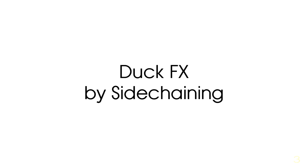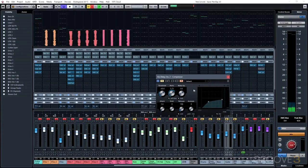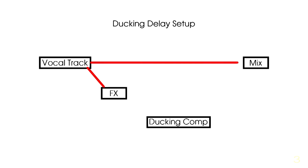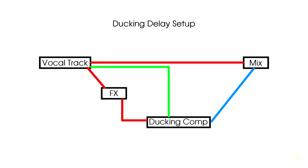Another favorite trick is to use a ducking compressor on a vocal delay. Dense reverbs and delays can muddy up an otherwise great vocal part. For this, you'll need to use the delay or reverb as a send effect on a different track, so the compressor doesn't affect your original vocal signal — we only want it to affect the delay or the reverb. Throw the compressor onto the track with the reverb or delay effect, and send your vocal signal to the sidechain of that compressor. When the vocal is present, it will duck the volume of that delay or reverb. When the vocal is soft or silent, the delay and reverb really come alive, giving the impression of a giant reverb without it interfering with your vocal sound.